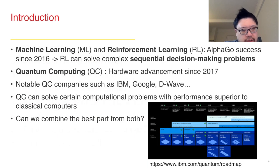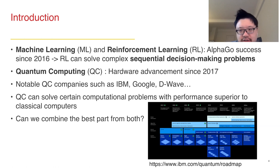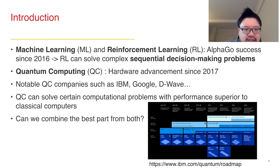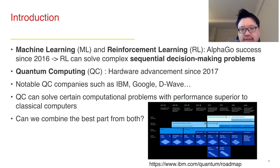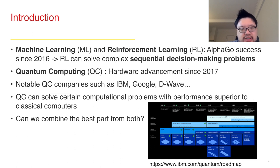Machine learning in general has gained very significant attention since the success of AlphaGo in 2016. This demonstrates that machine learning, especially reinforcement learning, can solve complex sequential decision-making problems. On the other hand, the field of quantum computing has seen significant hardware advancements since 2017, with notable companies such as IBM, Google, and D-Wave making significant progress.